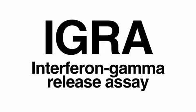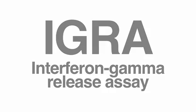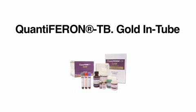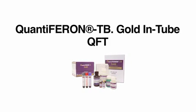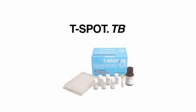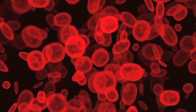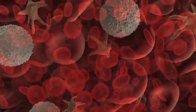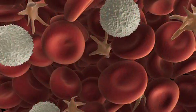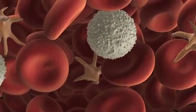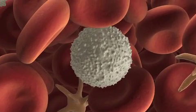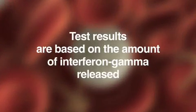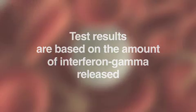IGRAs are the second test for diagnosing TB infection. Two types of IGRAs are available: Quantiferon TB Gold Intube, or QFT, and the T-spot TB. Both measure the immune response to TB proteins in blood. If someone is infected with TB bacteria, the white blood cells release interferon gamma. Test results are based on the amount of interferon gamma released.